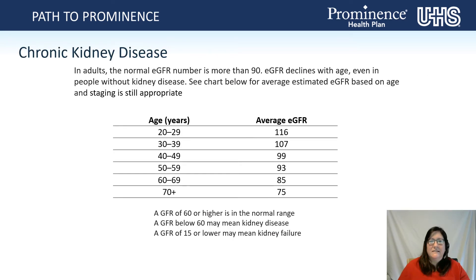For chronic kidney disease specifically in adults, the normal eGFR is more than 90. eGFR declines with age, even in people without kidney disease. See the chart for an average estimated eGFR based on age and staging. If you are age 60 to 69, your average GFR should be 85. If you are 70 and above, your average eGFR should be 75. A GFR of 60 or higher is in the normal range.